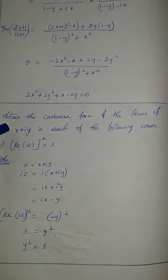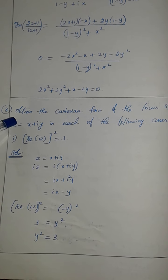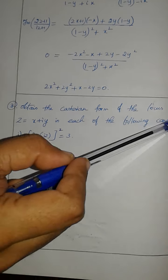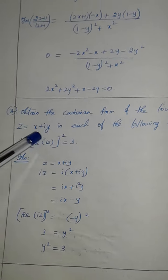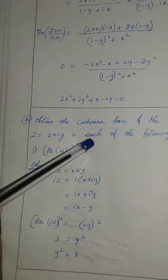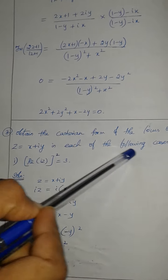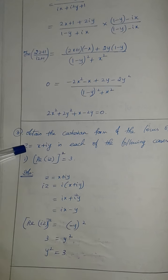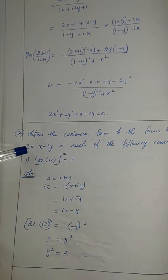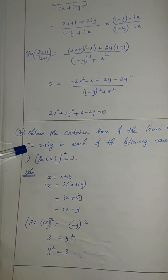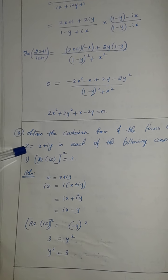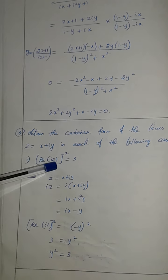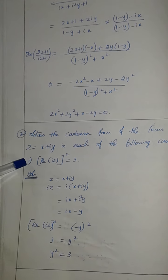This is Exercise 2.6, Question 3. Obtain the Cartesian form of the locus of Z in each of the following cases. Z is equal to Z. We have the Cartesian form, that is equation. The locus is equal to 3.